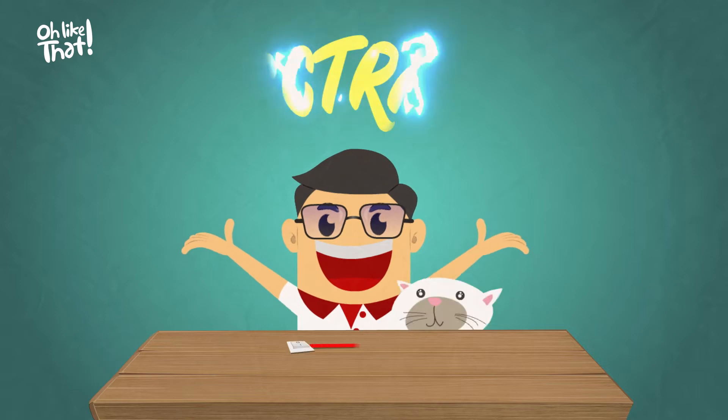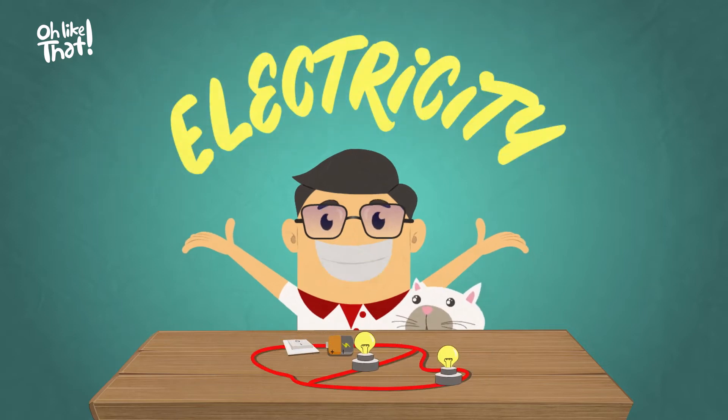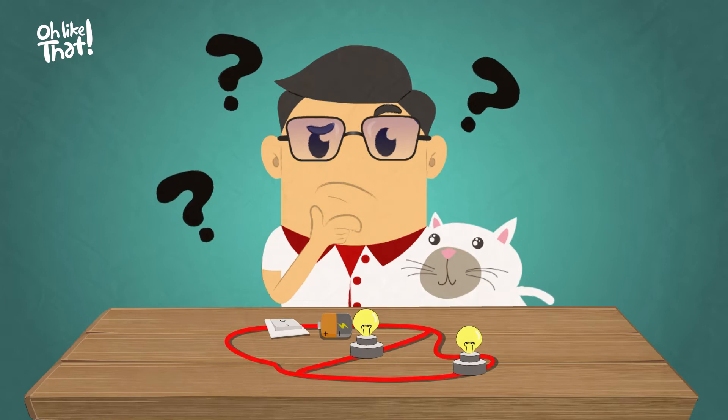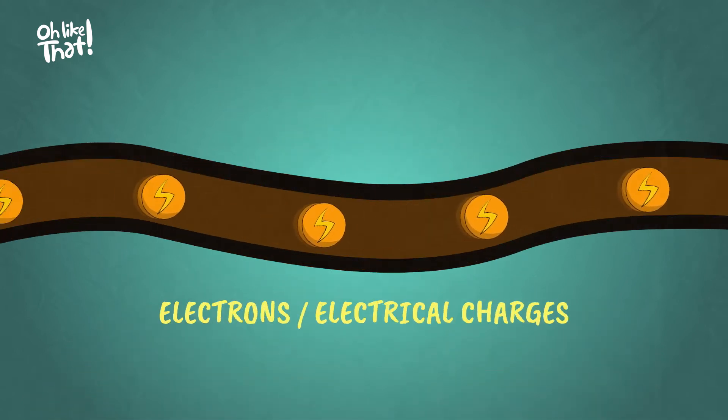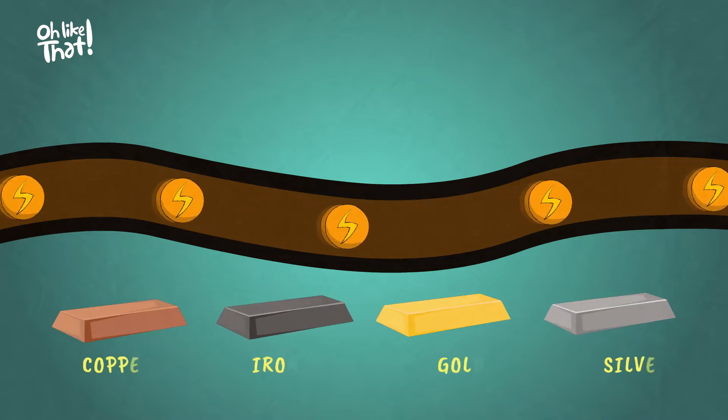Let's learn about something you hardly see but use all the time: electricity. So what is electricity? Electricity is the flow of electrons or electrical charges through conducting material like metals.